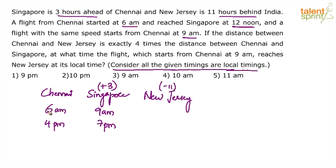If it is 6 am in Chennai, subtract 11 hours: 6 minus 11 is minus 5. Convert to 24-hour clock — 24 minus 5 is 19. 19 hundred hours is 7 pm. So the New Jersey time will be 7 pm. If you find the subtraction confusing, converting to 24-hour format makes it easy.